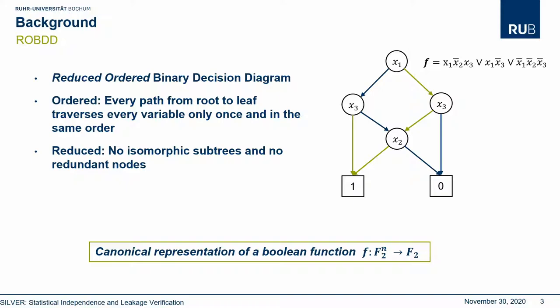Our verification tool utilizes so-called Reduced Ordered Binary Decision Diagrams, or ROBDDs for short. A BDD, or binary decision diagram, is simply a representation of a boolean function. An example can be seen on the right. Each node represents a binary variable, except the leaves, which represent the output value of the function. The outgoing edge of a variable node represents whether the variable is fulfilled or not. The structure can be recursively defined, where every variable node can be seen as the root of a new function, while the leaves are simply the constant functions that take 0 or 1.